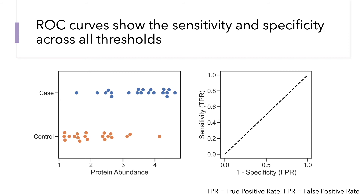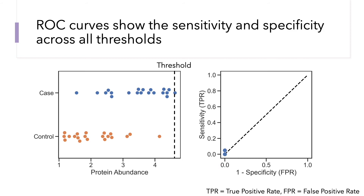We start by choosing a threshold higher than any of the data points in our dataset. At this threshold, we have a sensitivity of zero and a false positive rate of zero, so we plot that point on our ROC curve. We then lower the threshold until it hits the first data point — in this case, a disease case — correctly classifying it as a positive. Our sensitivity increases while our false positive rate does not, so we add another point.